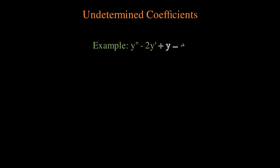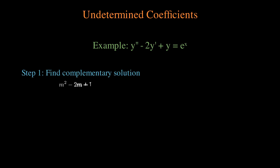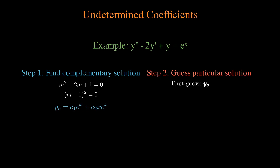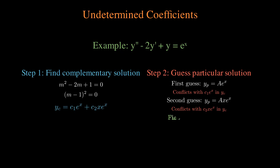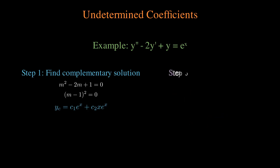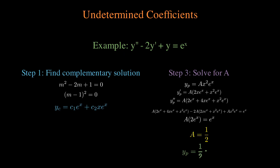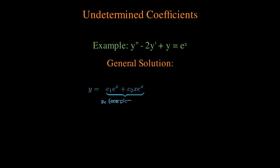Let's walk through an example. We find the complementary solution using the auxiliary equation and its roots. Then we try to guess the particular solution — we first guess e to the x, but it's already in the complementary solution, so we guess x·e to the x, which is also part of the complementary solution, so we go up even more and guess x²·e to the x. We solve for the coefficient in front of this term, giving us our particular solution, and together they give us the general solution.